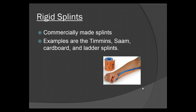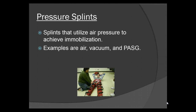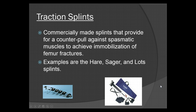Rigid splints are commercially made. Examples are the Timmins, the SAM splint, cardboard, and ladder splints. This right here is a SAM splint — as you can see, it is moldable to the patient's extremity. Pressure splints utilize air pressure to achieve immobilization. Examples are the air splint, vacuum splints, and the pneumatic anti-shock garment, pictured here.